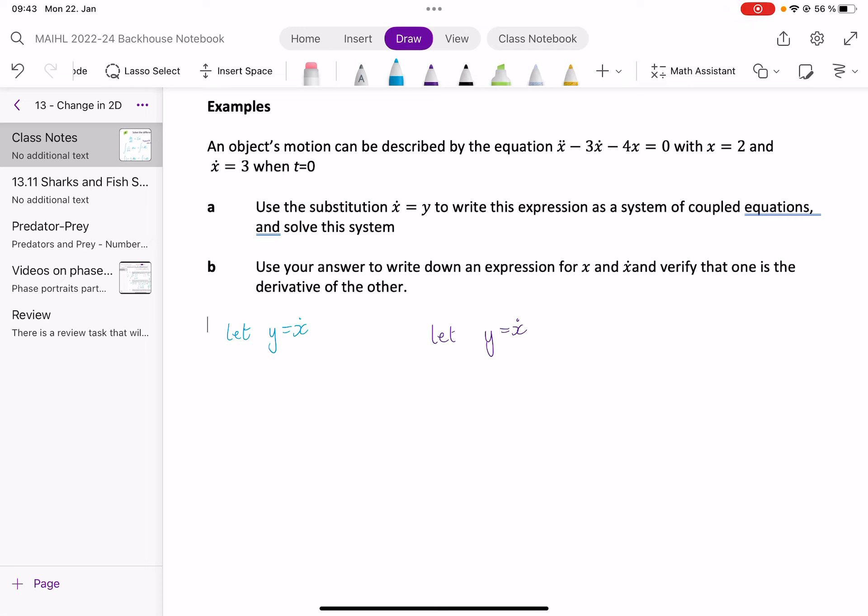The next step is we differentiate this. Okay, trying to use the dot notation, what would we get if we differentiate y equals x dot? Jules? Y dot equals x, two dots. Yeah, y dot equals x double dot. So we put two dots above the x and it shows us it's the second derivative.